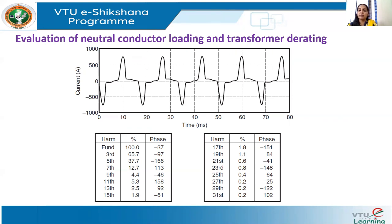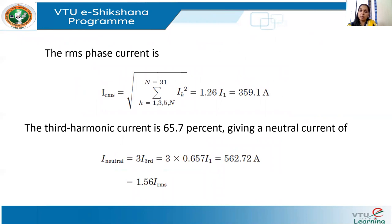We have seen the effect of third harmonic current in the system. All triplen harmonics will flow through the neutral, causing neutral overloading. The problem is to estimate the neutral conductor loading in amperes and as a percentage of the RMS phase current. Additionally, we must find the current the transformer is supplying and determine how much the transformer has to be derated for this harmonic load.